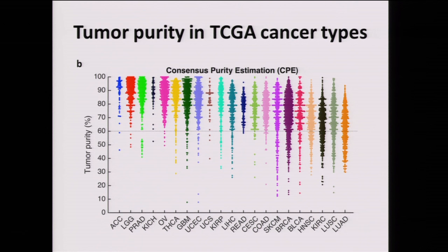We plotted tumor purity across all samples from the 21 cancer types. You can see two important things. First, there are major differences between cancer types. Some cancer types are very pure — those that emerge from the brain, for example — and some are very impure, such as lung, bladder, breast, and other cancer types.